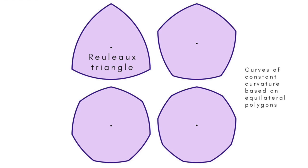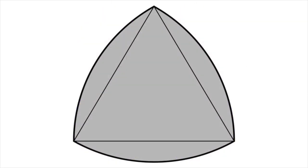The Rouleau Triangle is based on the equilateral triangle, and there are curves of constant width corresponding to the regular pentagon, heptagon, and so on. Some irregular polygons too form the basis for such curves.